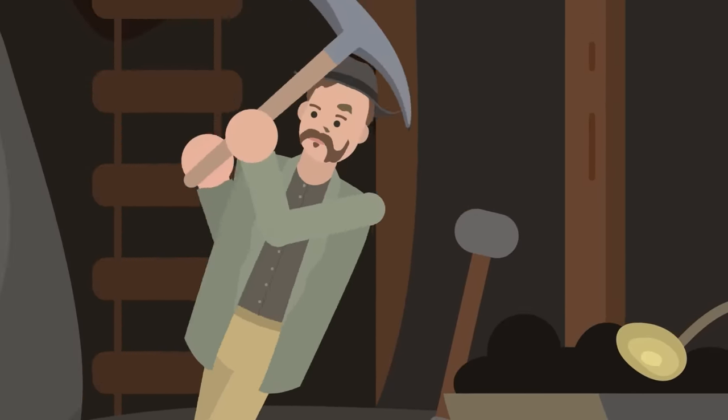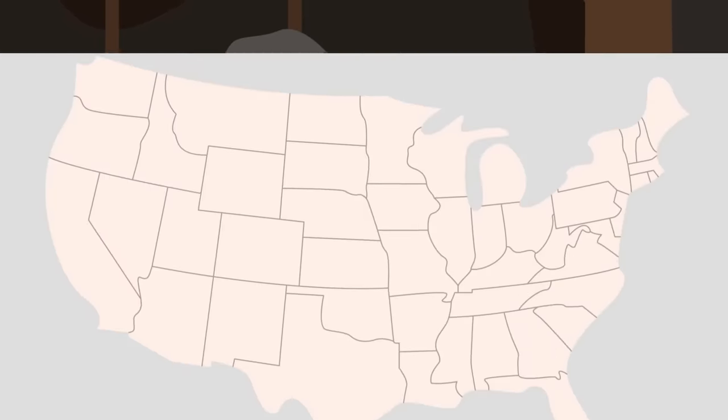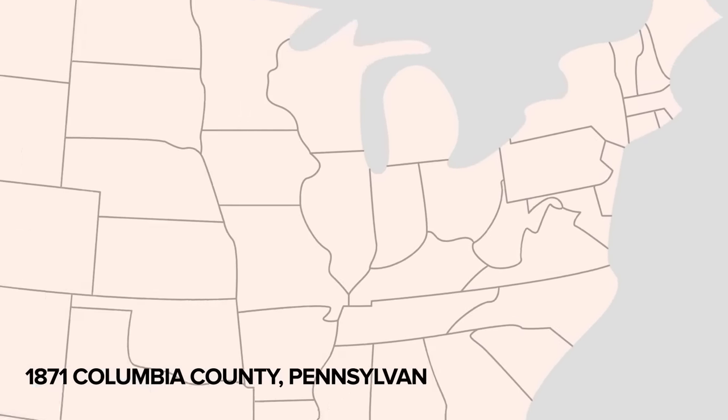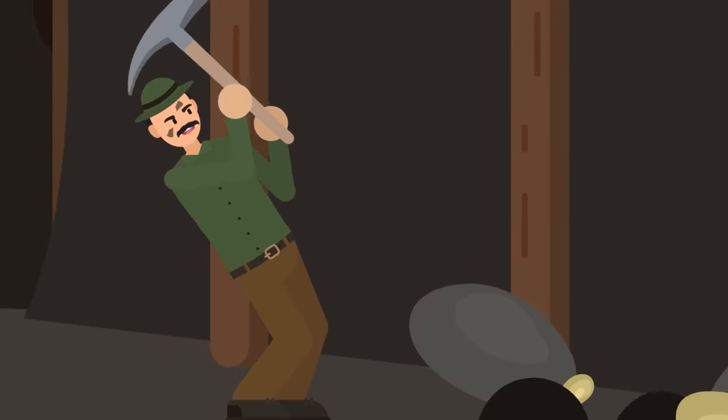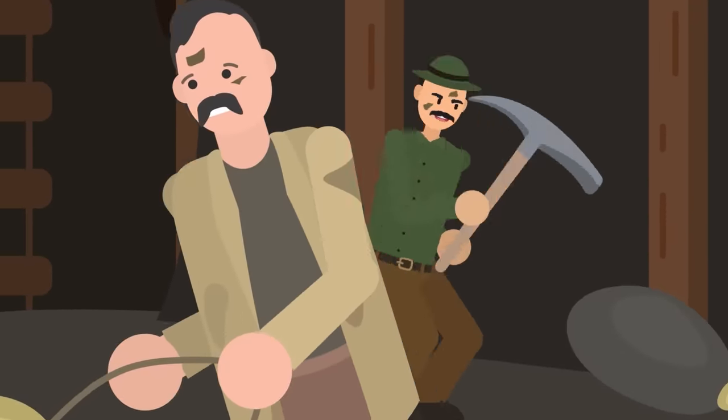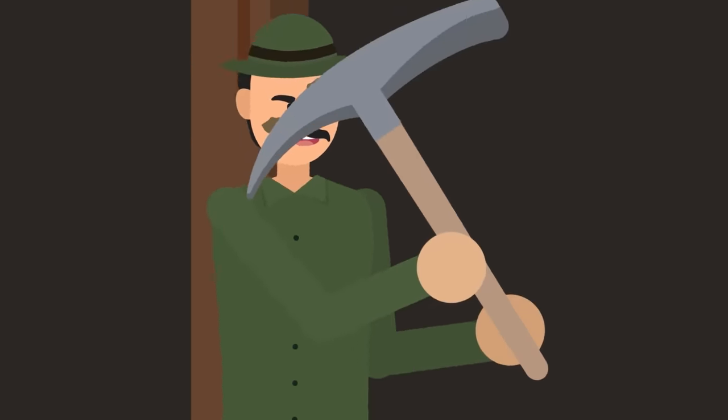A pickaxe shatters the rocky wall of a mine shaft, hundreds of feet below the earth. It's 1871, in a place that will later be known as Columbia County, Pennsylvania. Men performing back-breaking labor, their hands and faces blackened with dirt, all working in pursuit of that immensely valuable rock, coal.